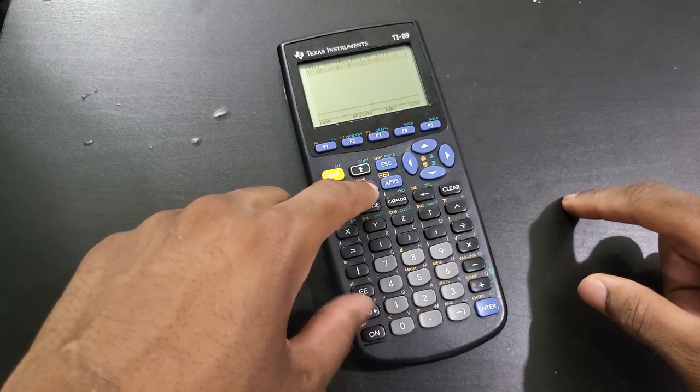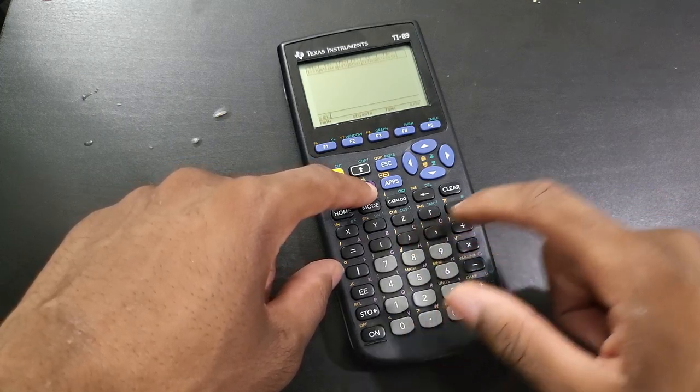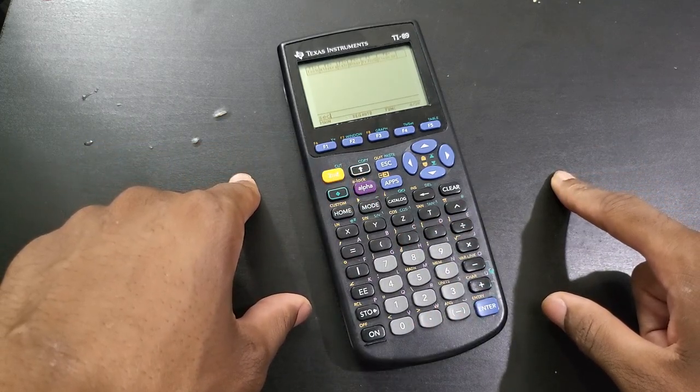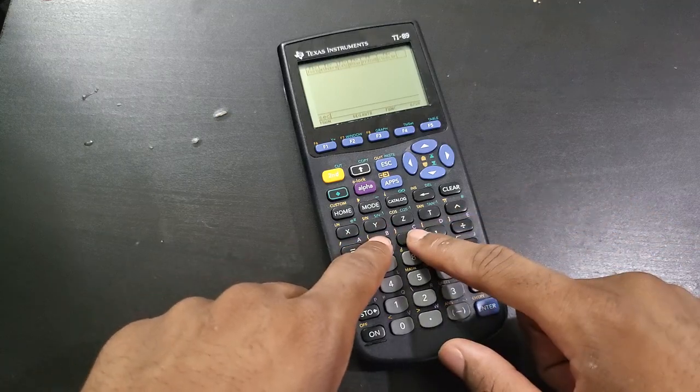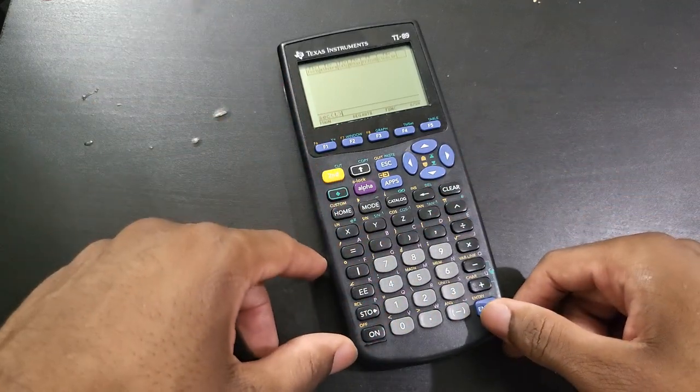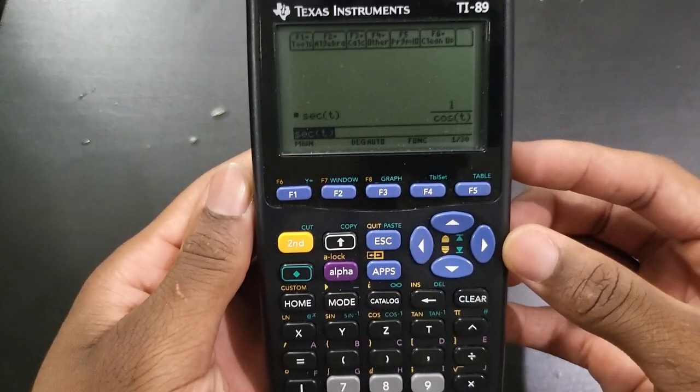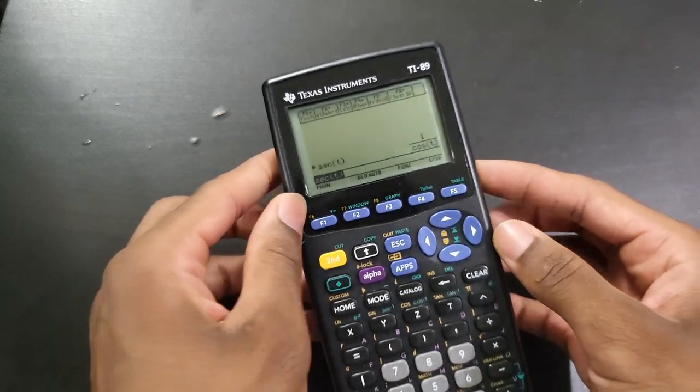The first method is holding the alpha key and start typing secant: S-E-C. Those three letters correspond to the secant function. You can put whatever you want in the parentheses, like secant of X or T. Press enter and it returns one over cosine of T.